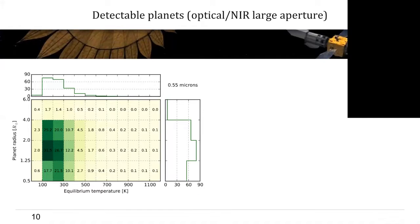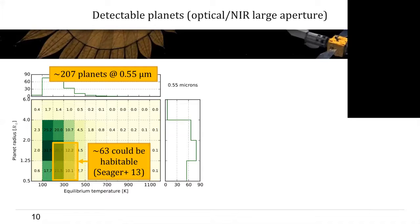And this here is the same two-dimensional histogram as shown before. And if we integrate up over the whole depicted parameter space, we will get 207 planets which can be detected at 550 nanometers, and roughly 63 of them could be habitable.